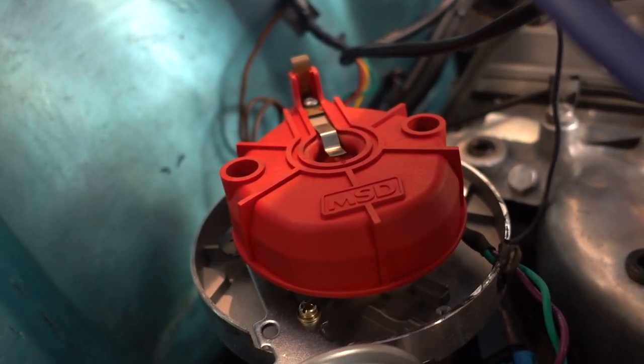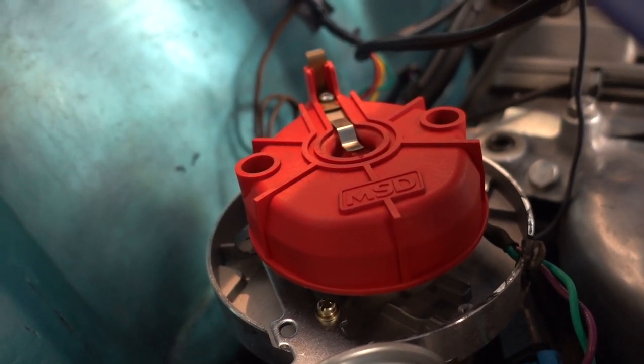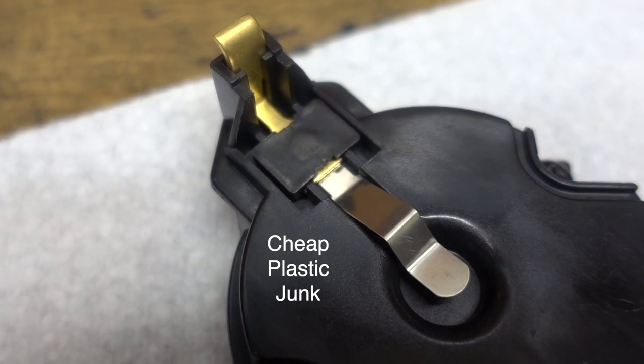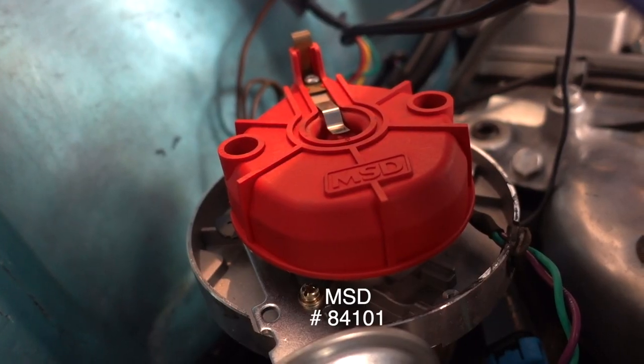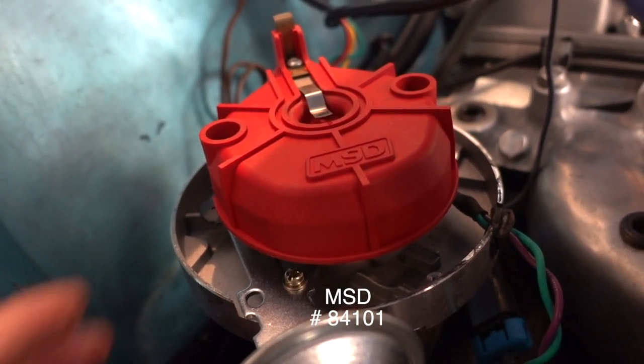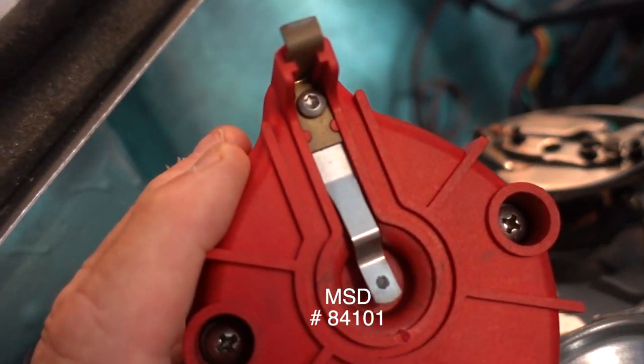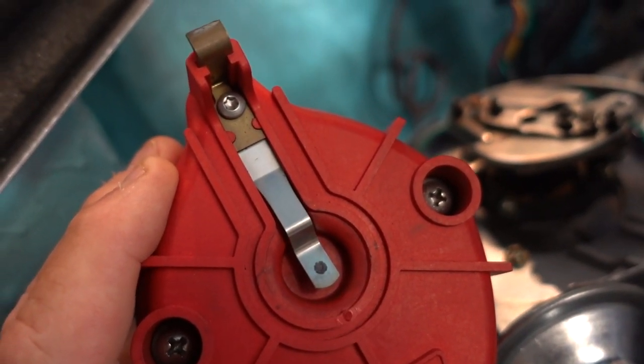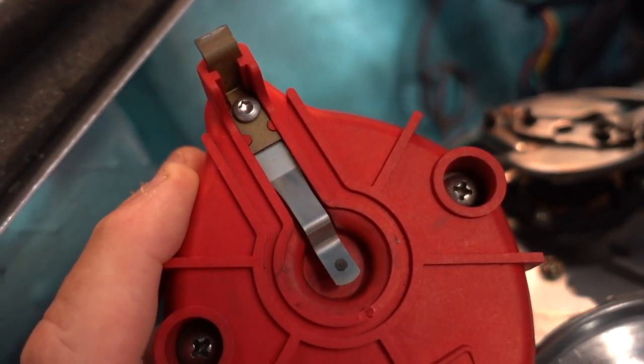MSD makes two different rotors. They make the cheap crappy two-piece ones that have two pieces of metal that make the connection, and they make this heavy-duty one that you just need to order. The other one is junk. This is a much better piece, and you can see it's just one piece of metal all the way to make the connection, and where it comes to the copper, it's actually riveted together. Good stuff there.